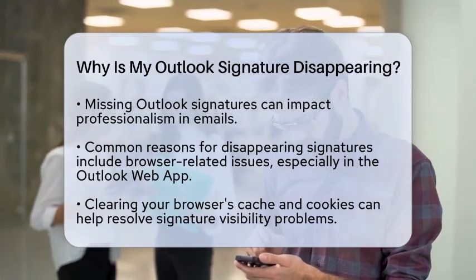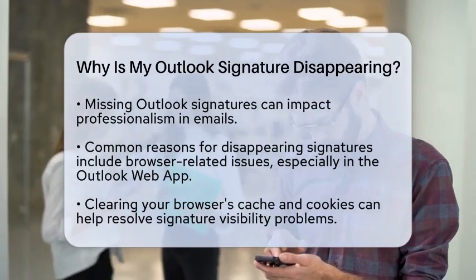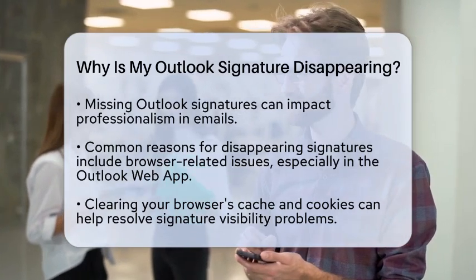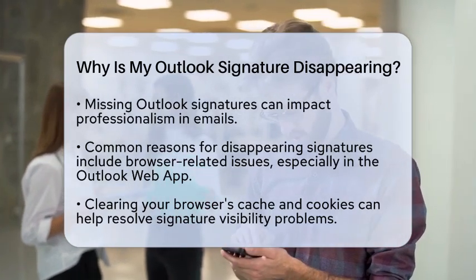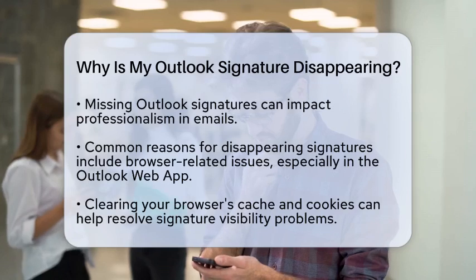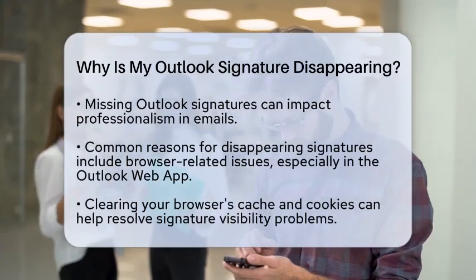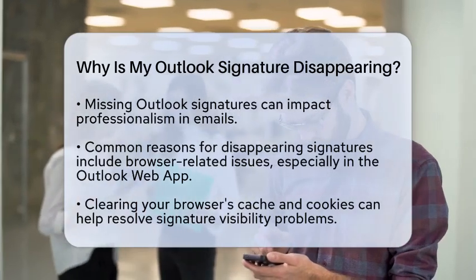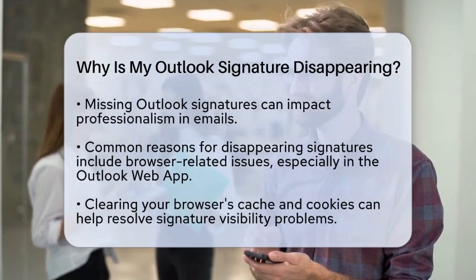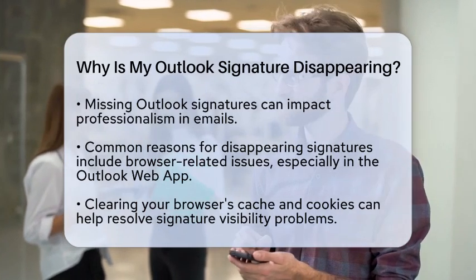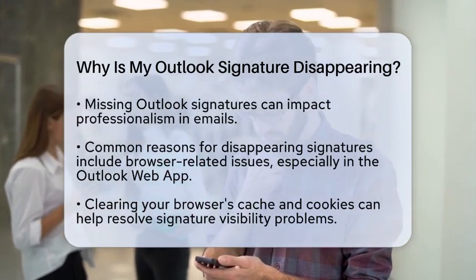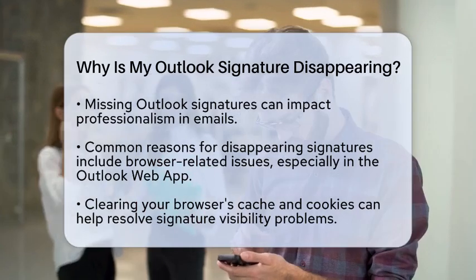First, if you are using the Outlook web app, the problem might be related to your browser. A corrupted or outdated browser cache can cause your signature to vanish. To fix this, try clearing your browser's cache and cookies. This simple step can help ensure that your browser loads the most recent settings.